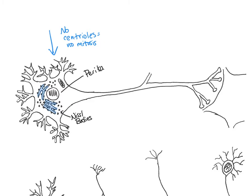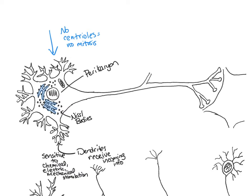The perikaryon contains neurofilaments and neurotubules, similar to the microfilaments and microtubules of other cells. The dendrites are projections from the cell body that receive incoming signals. The cell membrane of dendrites is sensitive to many different types of stimulation — chemical, mechanical, or electrical — which can potentially lead to an action potential.